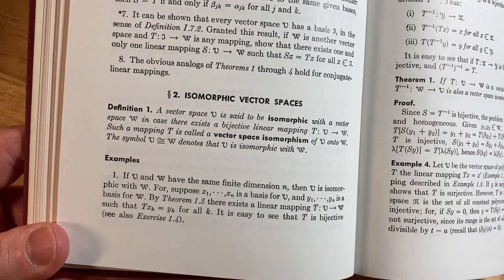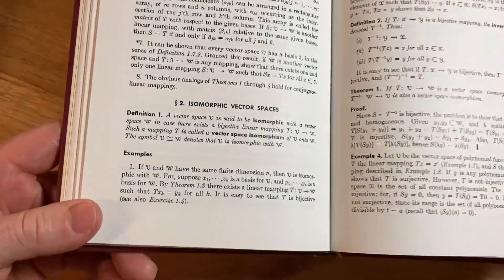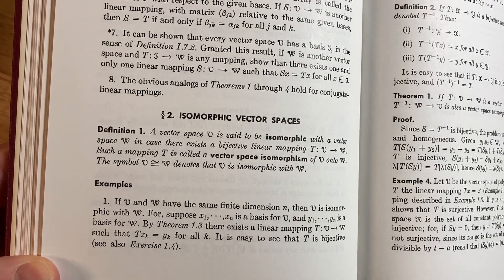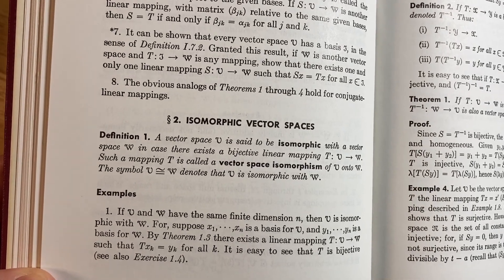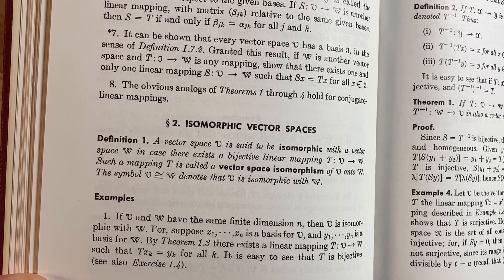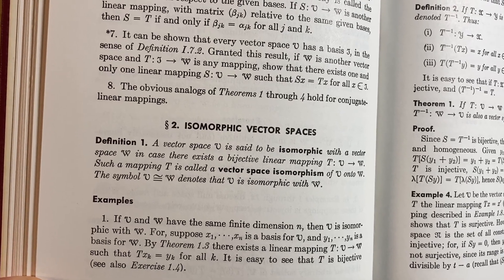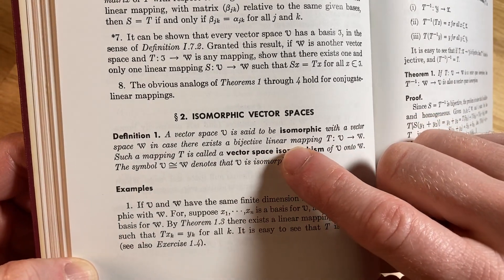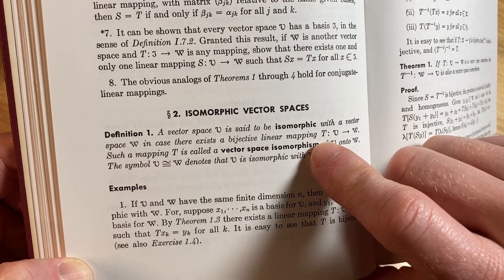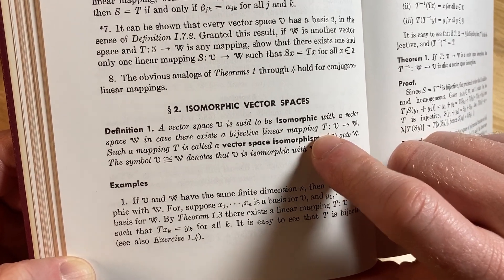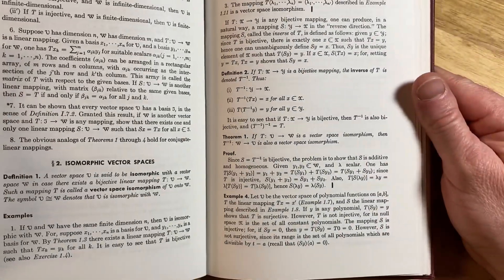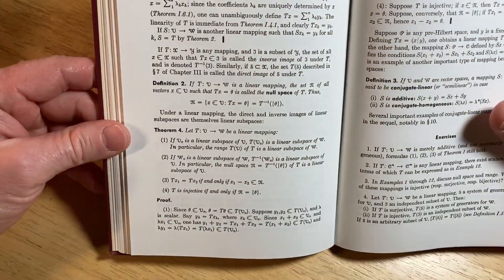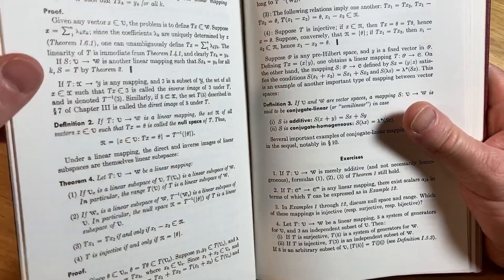Isomorphic vector spaces. A vector space v is said to be isomorphic with a vector w in case there exists a bijective linear mapping t from v to w. Such a mapping t is called a vector space isomorphism of v onto w. The language is strange, right? It says a vector space v is said to be isomorphic with a vector space w in case there exists. I would just say if there exists. I don't know why I'm nitpicking it, but I just thought it was an odd use of language. But maybe it's old school language or maybe it's correct. I don't know.